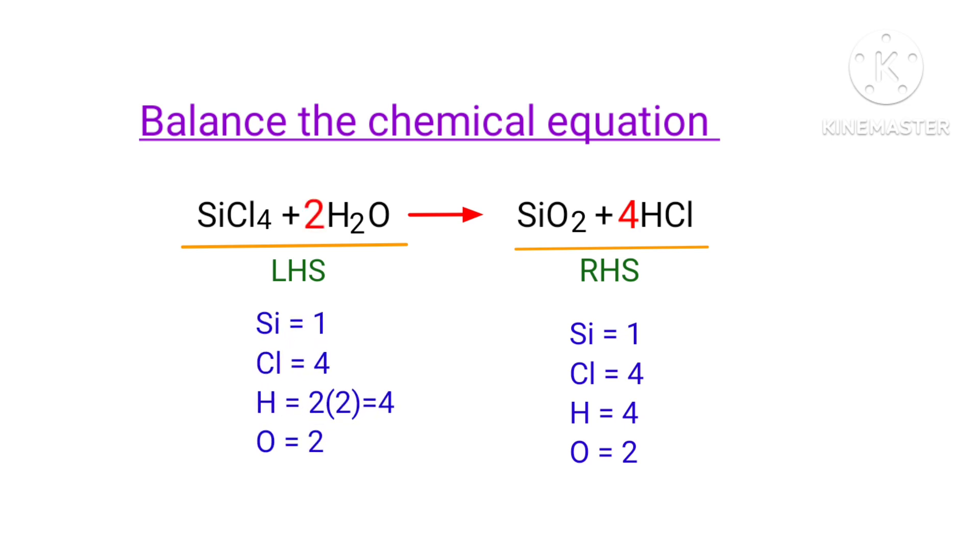The equation is now balanced. There are 1 silicon atom, 4 chlorine atoms, 4 hydrogen atoms, and 2 oxygen atoms on both sides.